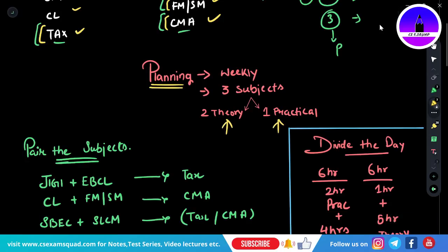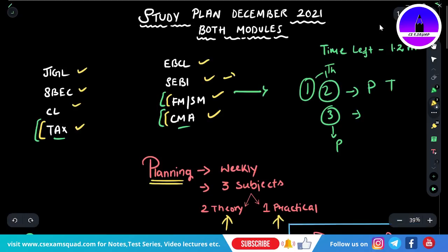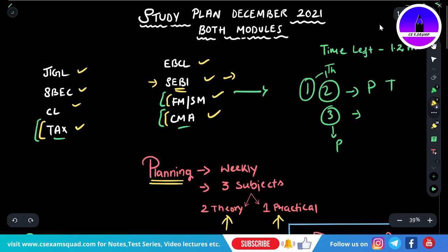We'll start weekly planning: three subjects a day, two theory and one practical. A short suggestion for all subjects: for SEBI, start from the very last - start from Part B, then come to Part A. Part B questions are asked from all the definitions, so read all the definitions in Part B. I uploaded a video one year ago which is still relevant today as the syllabus, marks distribution, and question paper pattern haven't changed. Go to that SEBI video for guidance.